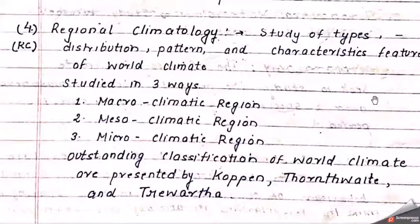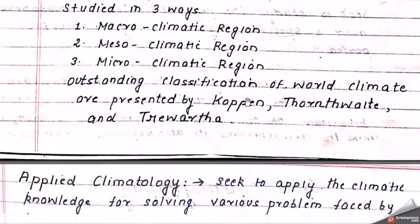Some of the three pioneers who classified world climates are Köppen, Thornthwaite, and Trewartha. This is a topic we are going to study in Geography Paper 1 and Geography Paper 2, since it appears in both papers.